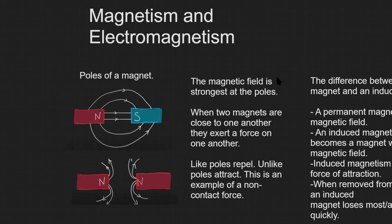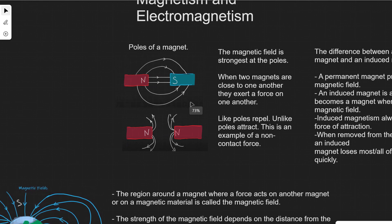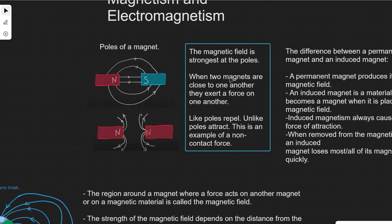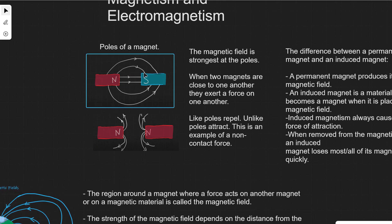Let's revise magnetism and electromagnetism in GCSE physics. Starting with the poles of a magnet: the magnetic field is strongest at the poles, and this is what it actually looks like. The field lines always go from north to south.